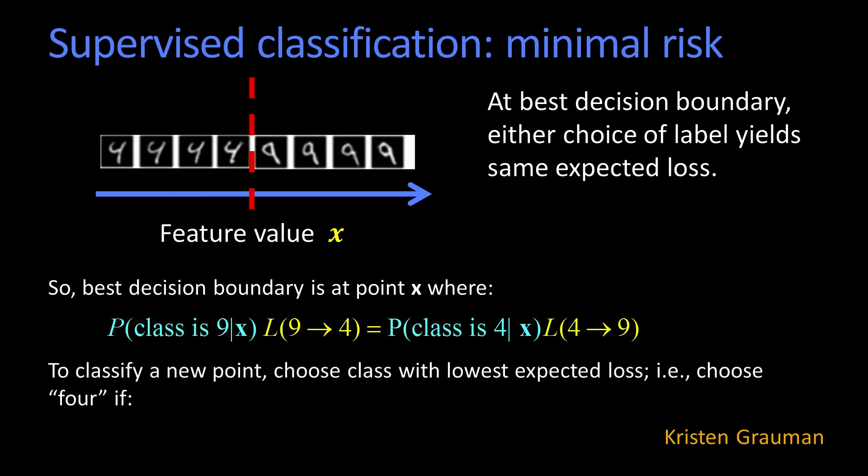What that means is, if I'm going to classify a new point, I'm just going to look at these values. At some new point x, what's the probability that it's really a four times the probability that I call a four a nine? If that's greater than the probability that it's a nine times the loss of calling a nine a four, if that's true, I'm going to call this thing a four, otherwise I'm going to call it a nine.